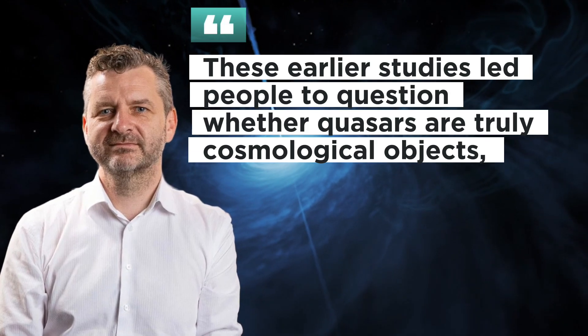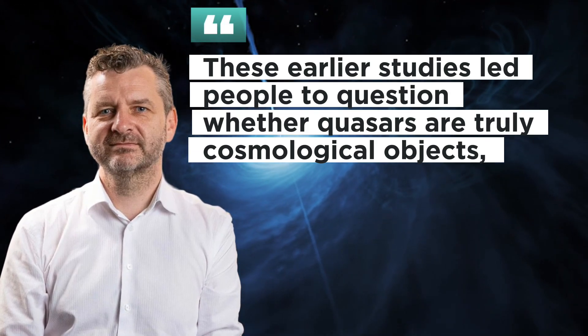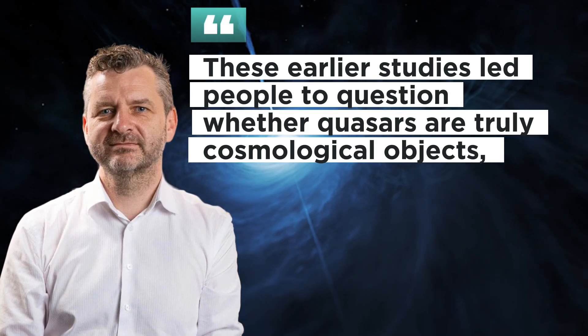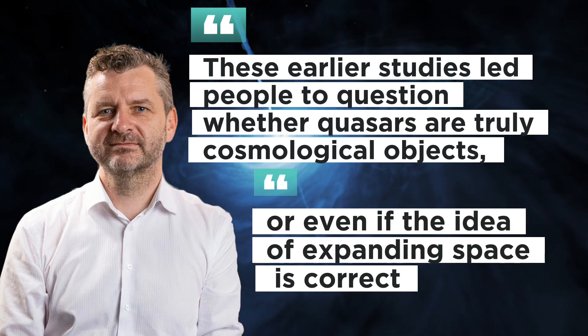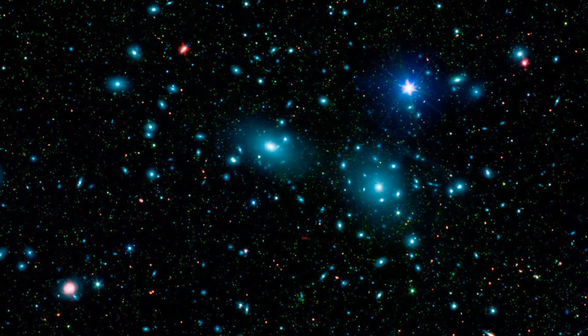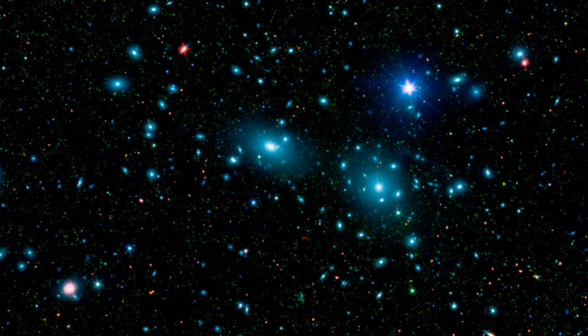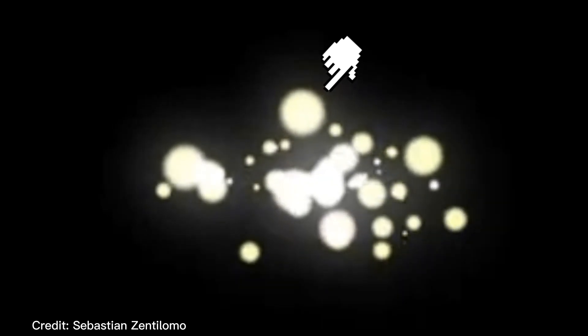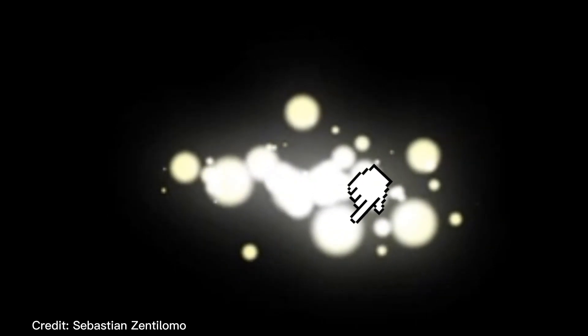Professor Lewis said these earlier studies led people to question whether quasars are truly cosmological objects, or even if the idea of expanding space is correct. But earlier the samples of quasar were small and observed over a much shorter time period. By dramatically expanding both the number of quasars and the duration of observations, the two researchers found that they do appear to flicker in slow motion compared to more recent quasars.